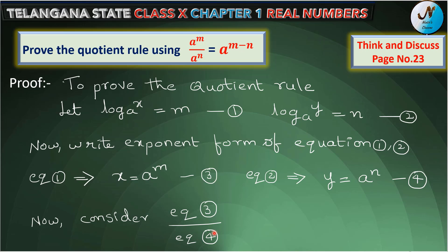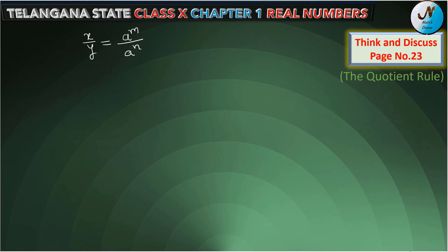Now consider equation 3 by equation 4, which implies x by y is equal to a power m by a power n. Now by the law of exponent, a power m by a power n can be written as a power m minus n. We can write x by y is equal to a power m minus n.